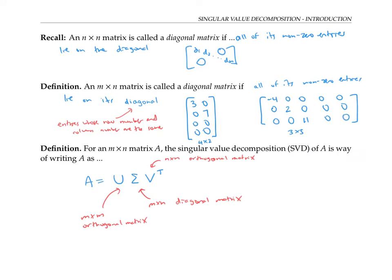Let me draw these matrices with squares and rectangles to illustrate the dimensions. So here's A, an m by n matrix. Here's U, an m by m square matrix. Sigma is an m by n matrix just like A, and V transpose is an n by n matrix. And actually V is also n by n.